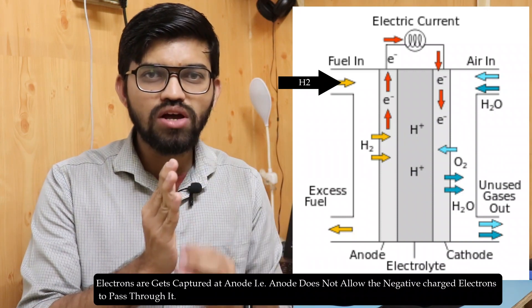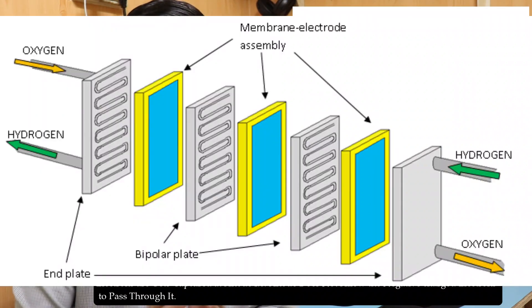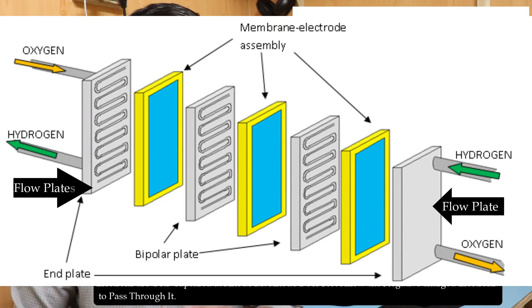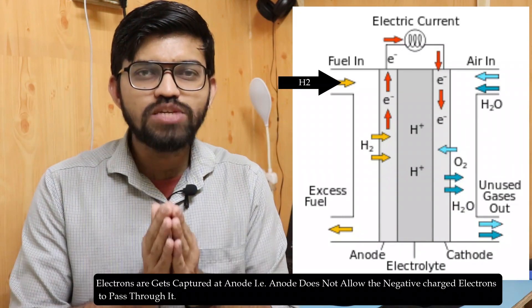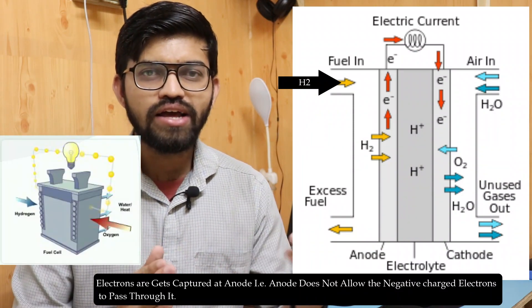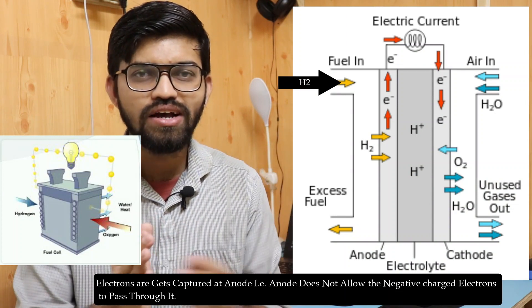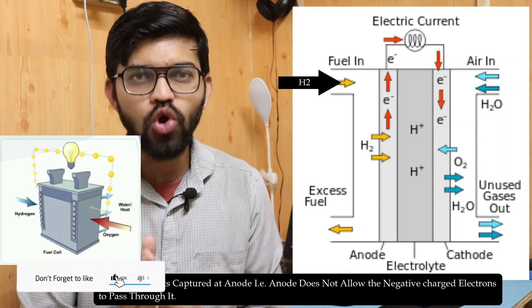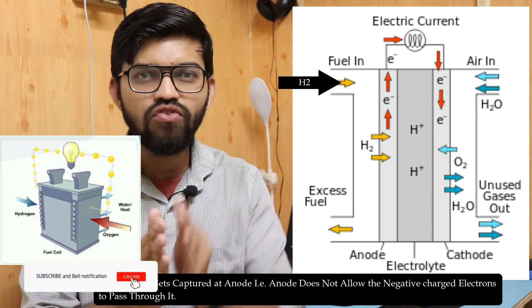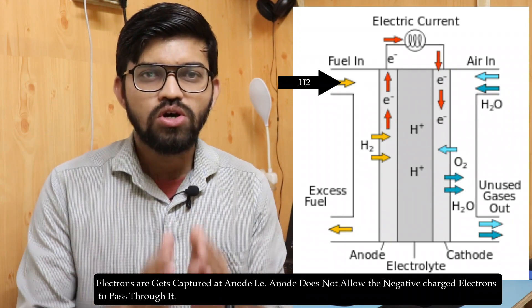The captured electrons accumulate at the anode and are then sent back into the circuit by means of flow plates. This flow of electrons generates electricity. When we apply a load to that electric circuit — like a light bulb — the bulb will glow. This is the flow of electrons occurring at the anode.